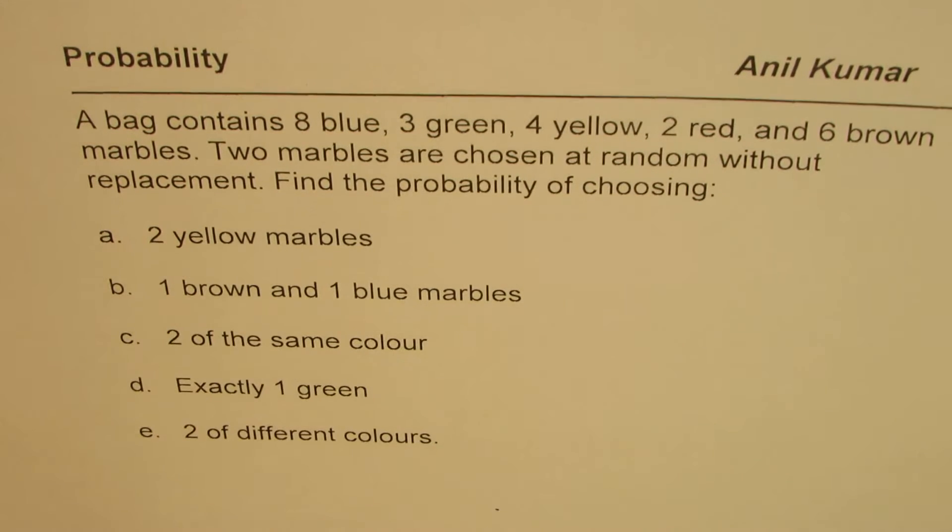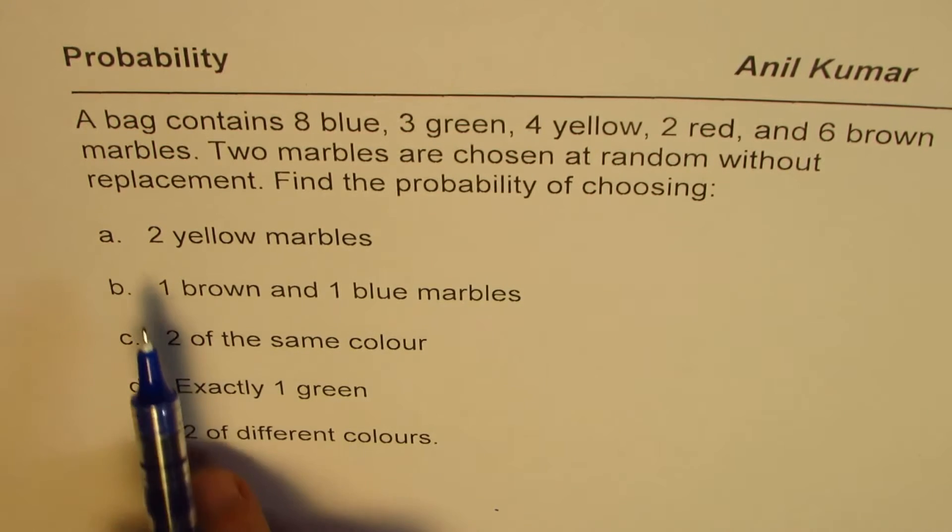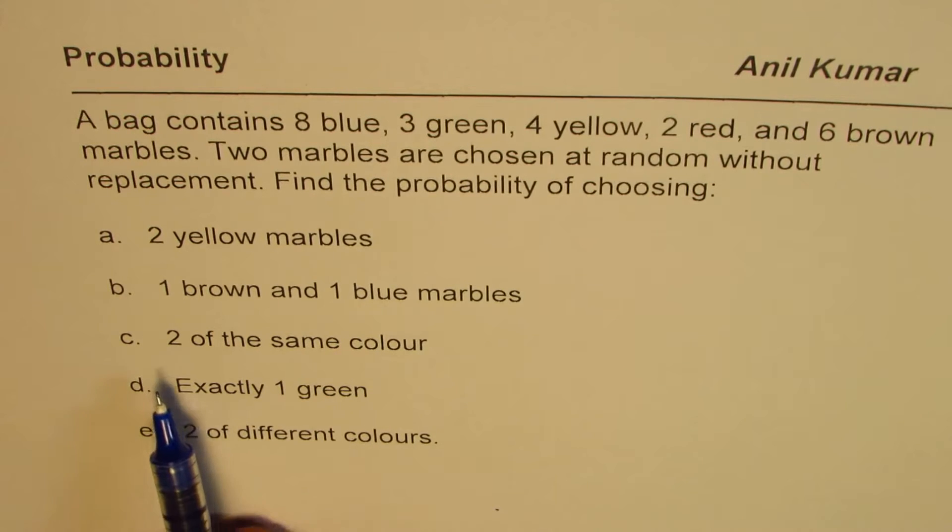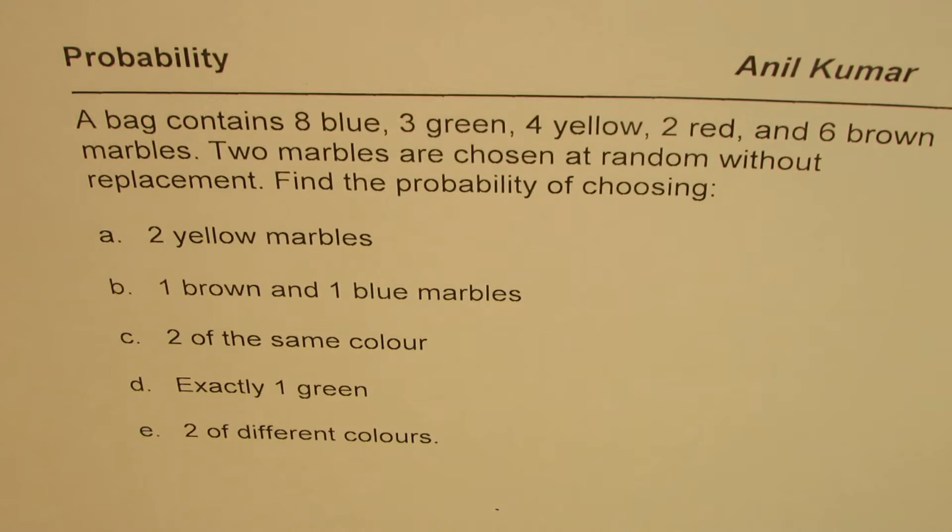Two marbles are chosen at random without replacement. So without replacement means it is a dependent event. Find the probability of choosing 2 yellow marbles, 1 brown and 1 blue marble, 2 of the same color, exactly 1 green marble and 2 of different colors. It is a review question. You can pause the video, answer and then look into my suggestions.